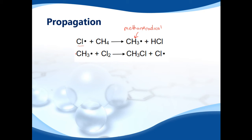Now in the second equation, the methane radical is reacting with Cl2, and it makes something called a halogenoalkane. In this case, it's chloromethane.